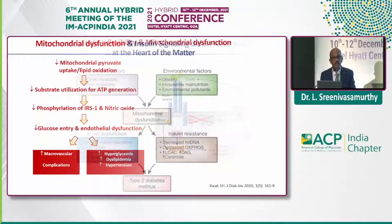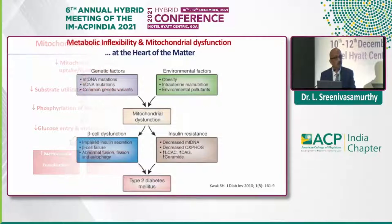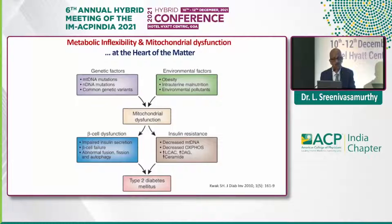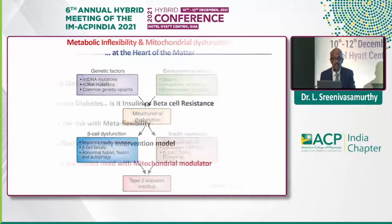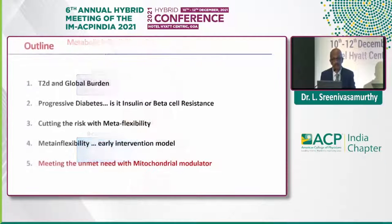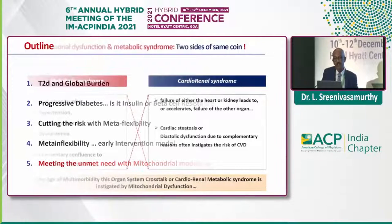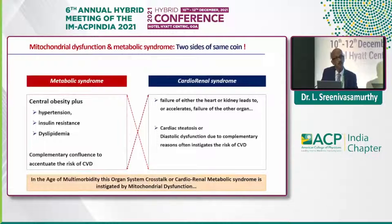Metabolic inflexibility with respect to mitochondrial dysfunction has been proposed through various genetic and environmental factors, eventually affecting beta cell function and insulin resistance and resulting in the complications of diabetes. This age of multimorbidity and the continuum of cardiorenal metabolic syndrome is now proposed to be instigated by this mitochondrial dysfunction.